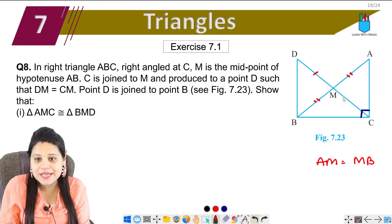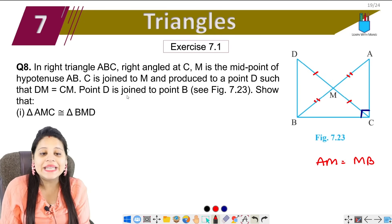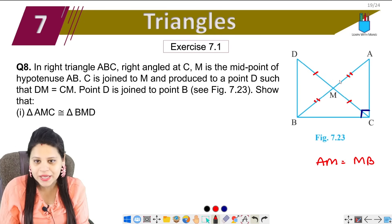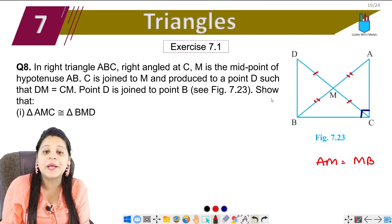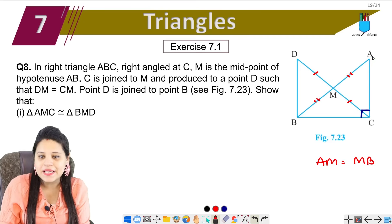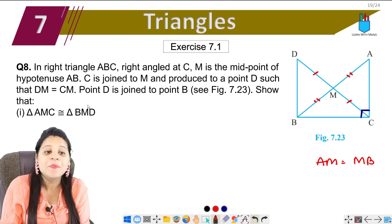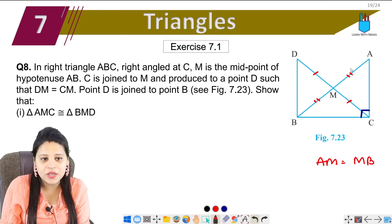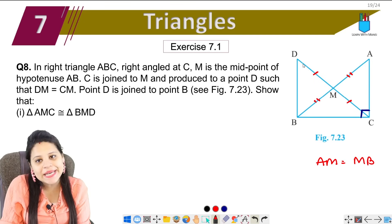DM is equal to CM — this is given. Point D is joined to point B. Now we need to understand how to make the figure. We have to show that triangle AMC is congruent to triangle BMD — these are the two triangles we are talking about.